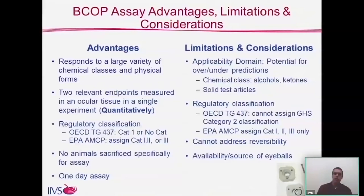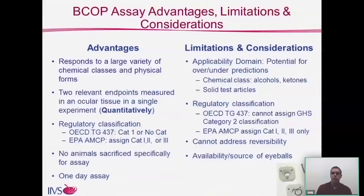Some limitations of the BCOP assay include potential for over- or under-predictions with certain chemical classes. Alcohols and ketones showed over-prediction in the validation study, and solid test articles showed higher rates of under-prediction. For regulatory classification, a GHS Category 2 classification cannot be assigned. For the EPA program in the US, it can only assign Category 1, 2, or 3, though in combination with other assays the full range of EPA classifications can be covered. The assay cannot address reversibility — likely one of the main reasons no in vitro assay can properly assign a Category 2 classification currently. Additionally, availability and sourcing of bovine eyeballs can be difficult in some countries.